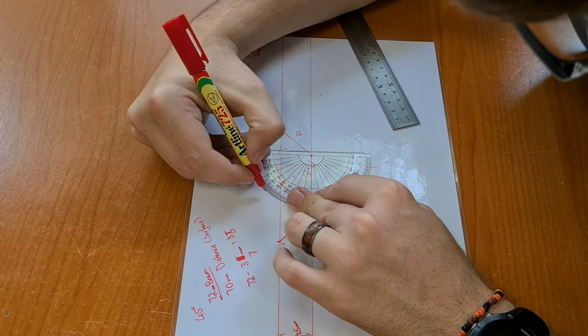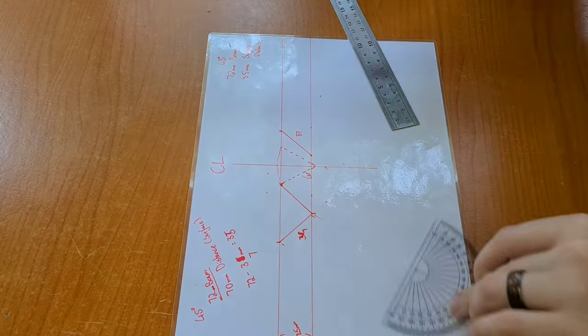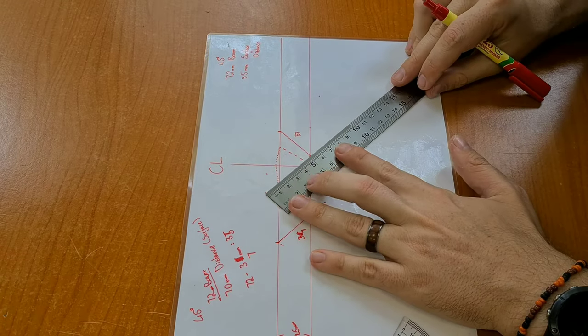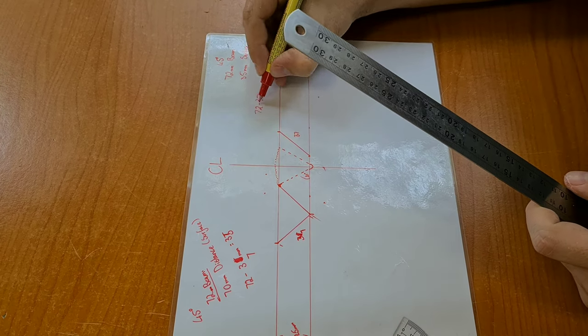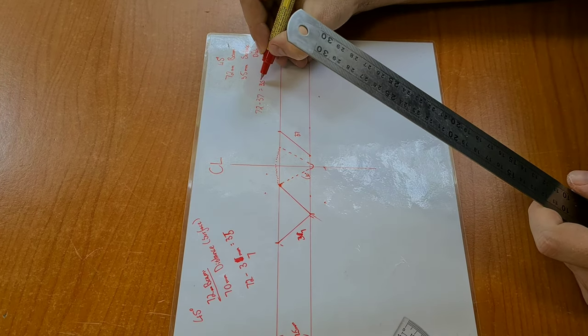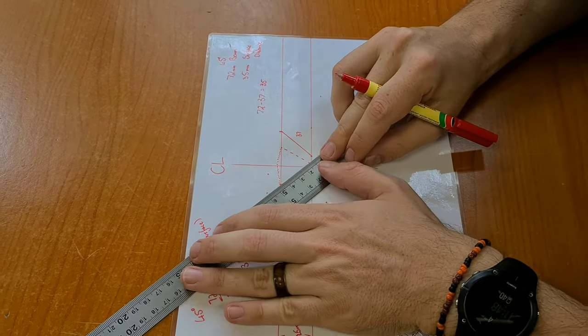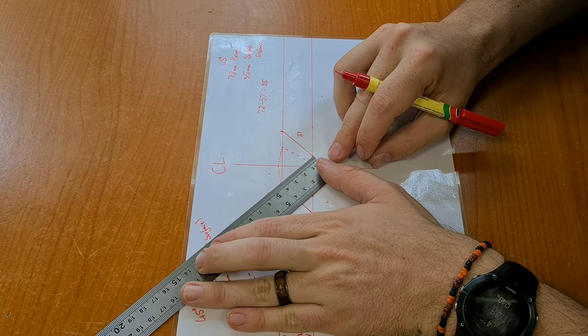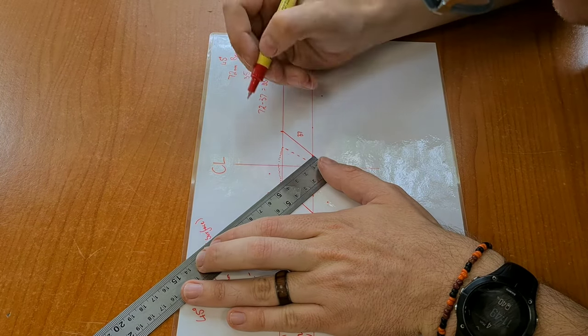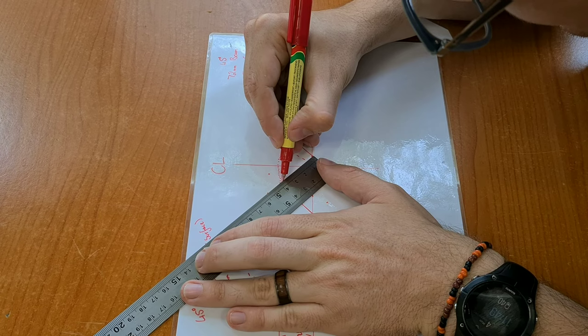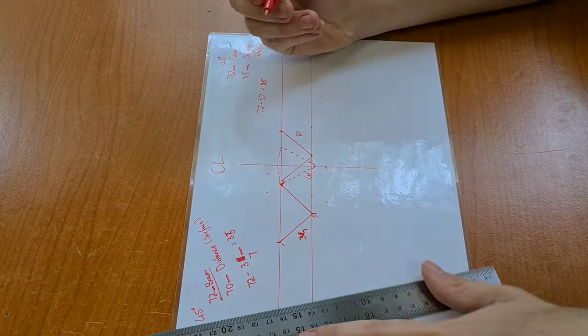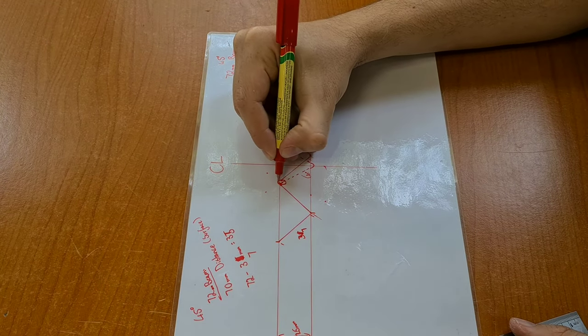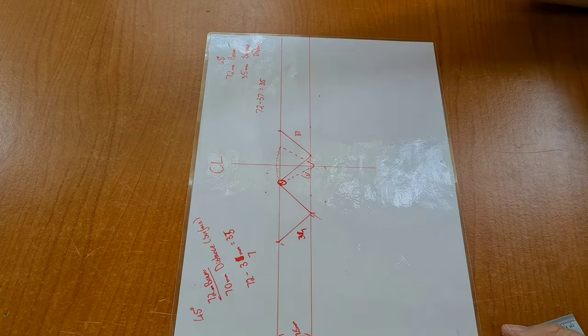Okay, 45 degrees from here, and we're drawing it up. So if it's 72 minus 37, we should have 35 left. So if we have our weld, it seems to plot out in this area over here.